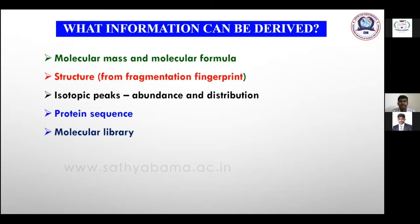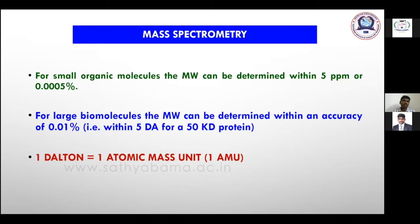Mass spectrometry can provide molecular mass and molecular formula of a compound. We can get structural information from fragmentation fingerprints. It is excellent for identification and determination of isotopic peaks, their abundance and distribution. We can do protein sequencing using multi-stage MS. Mass spectrometry acts as a molecular library containing information on all compounds from small organic molecules to very large organic hormones.